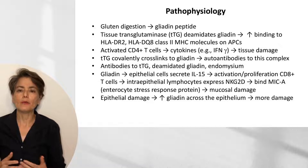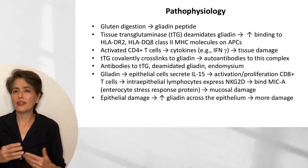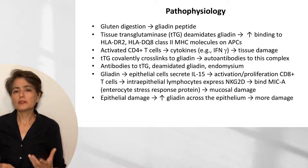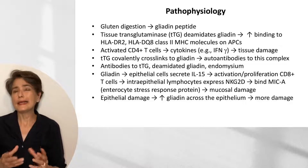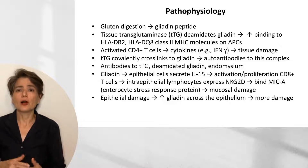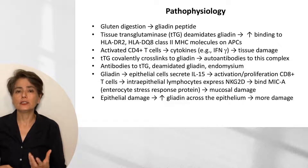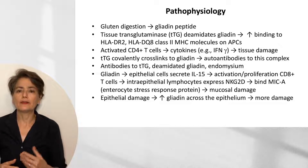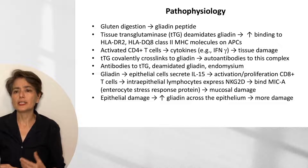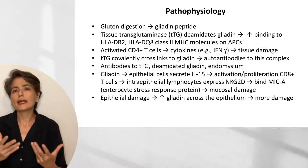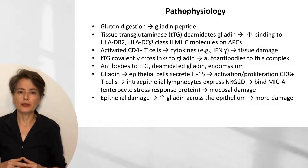We also know that tissue transglutaminase can covalently cross-link to gliadin, forming neoantigens, which may also drive the formation of autoantibodies. Gliadin itself is irritating to the intestinal epithelium and provokes epithelial cells to secrete IL-15. IL-15 causes the activation and proliferation of CD8-positive T-cells, which migrate into the epithelium — this is referred to as intraepithelial lymphocytosis.